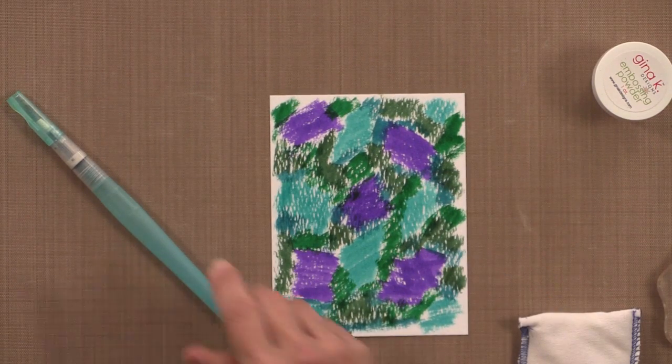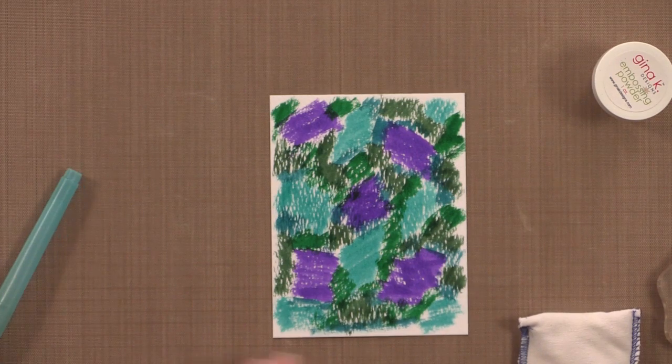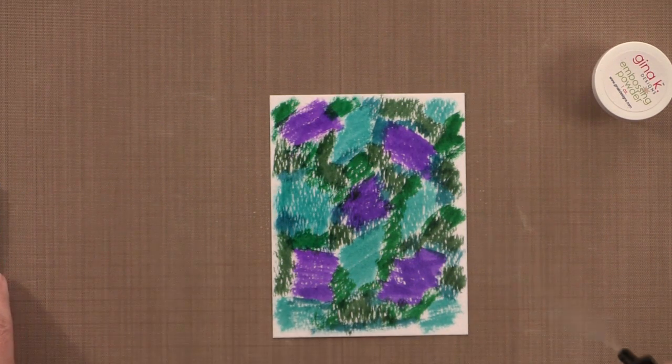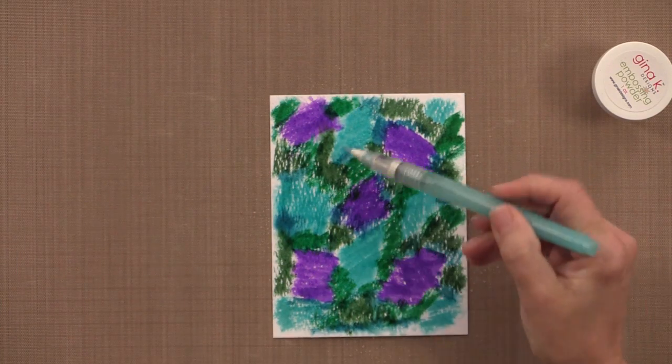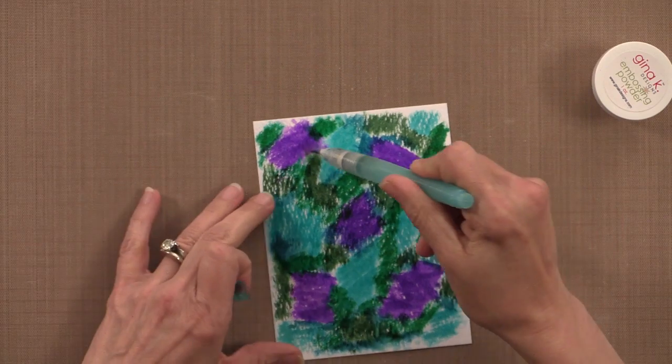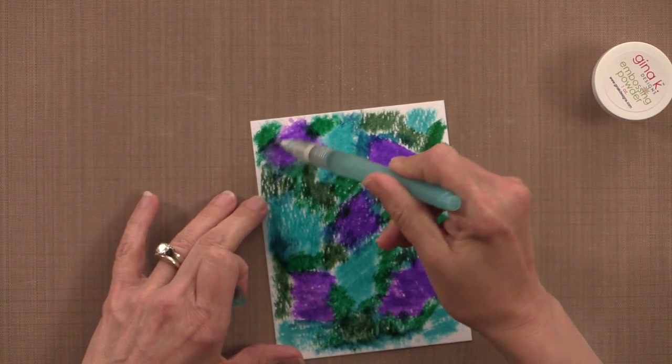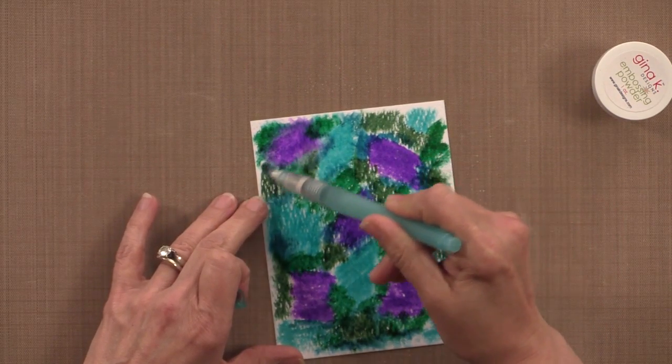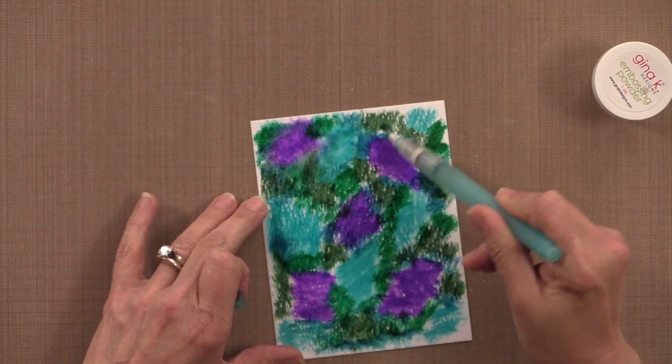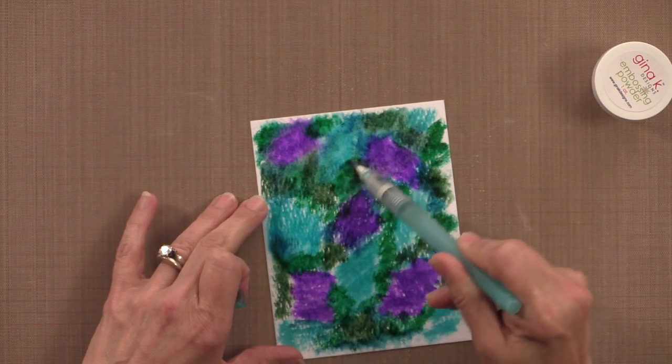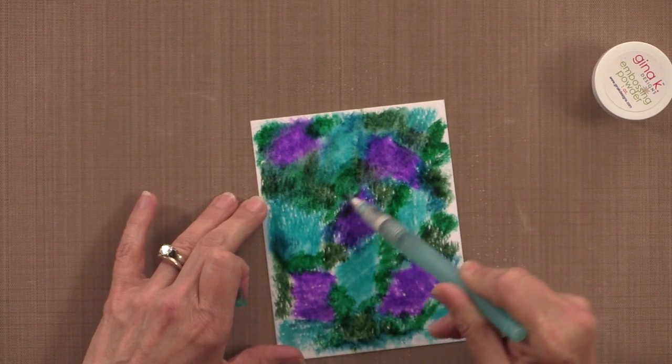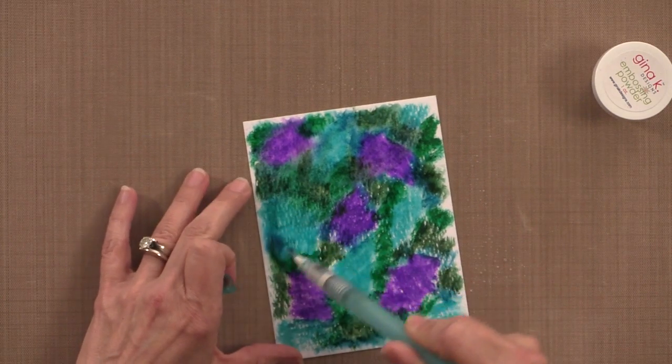So now the next step is to add a little bit of water. I'm going to spritz some on with my water bottle, just a light mist. And then I'm going to use my water brush to kind of blend some of that out. Looks like quite a mess right now, doesn't it? But look how vibrant they get when they get wet. That is so pretty.